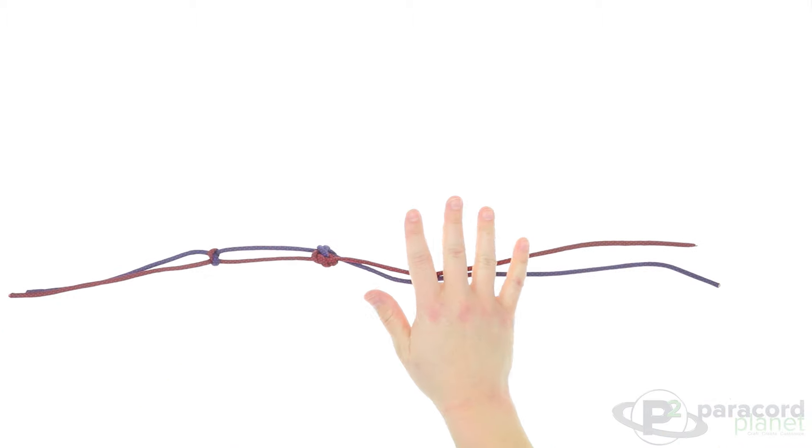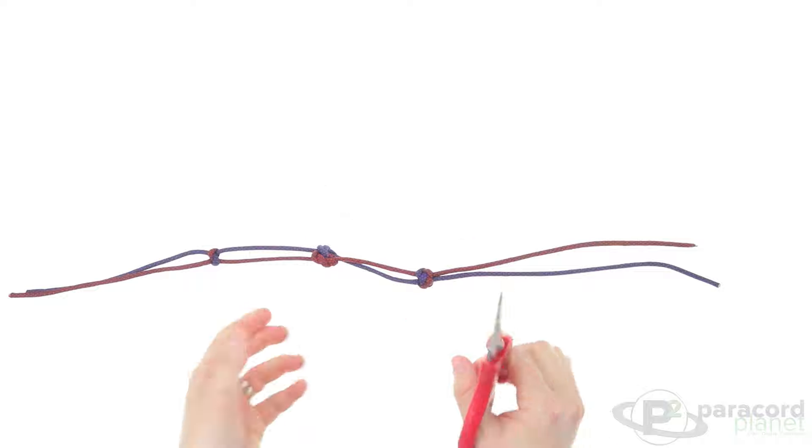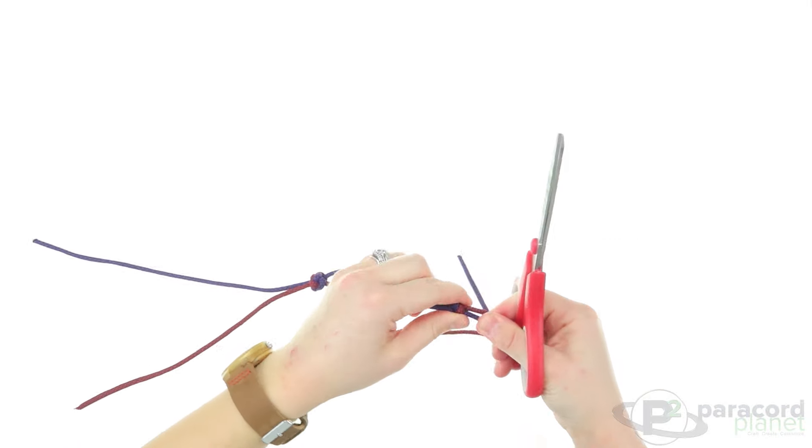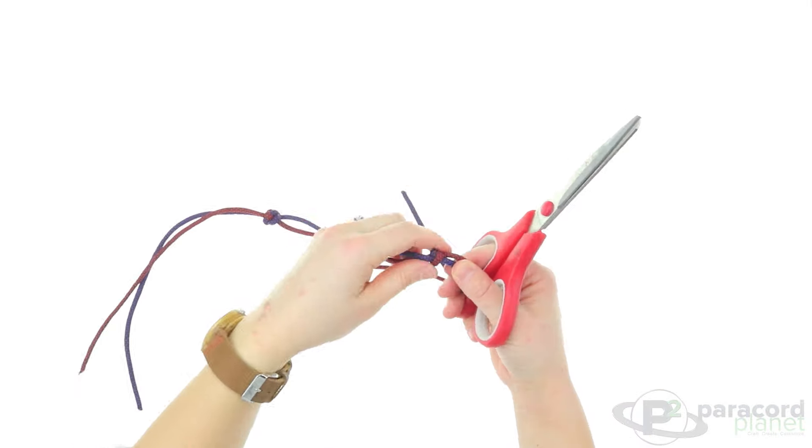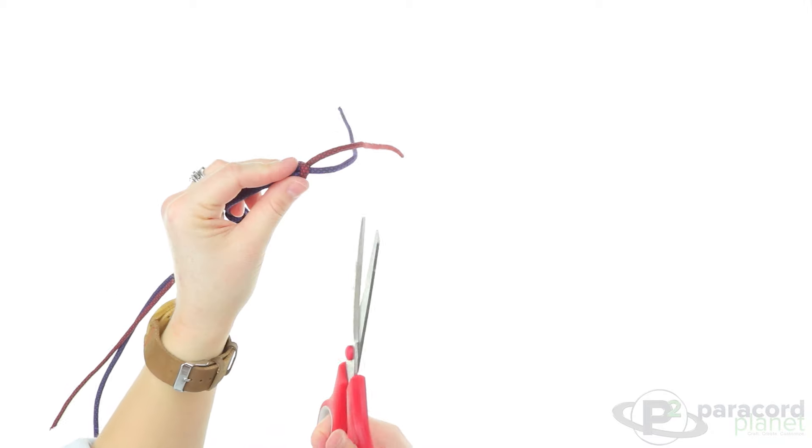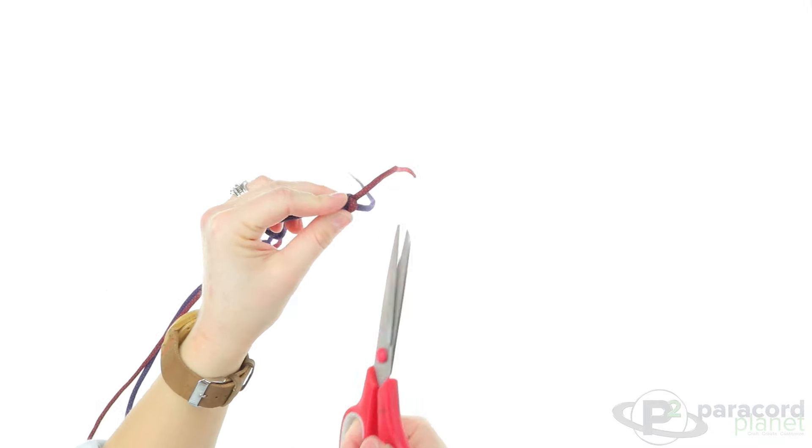So lastly, all that you're going to need to do is cut off both ends of the snake knot and the diamond knot. And then you'll just burn them carefully and then flatten them with the side of your scissors.